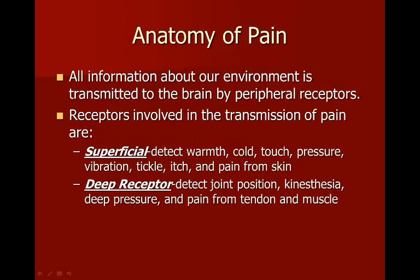All information about our environment is transmitted to the brain by peripheral receptors. The receptors involved in the transmission of pain are superficial — usually located on the surface of your skin — and they detect different things like warmth, cold, touch, pressure, vibration, tickle, itch, and pain from the skin.